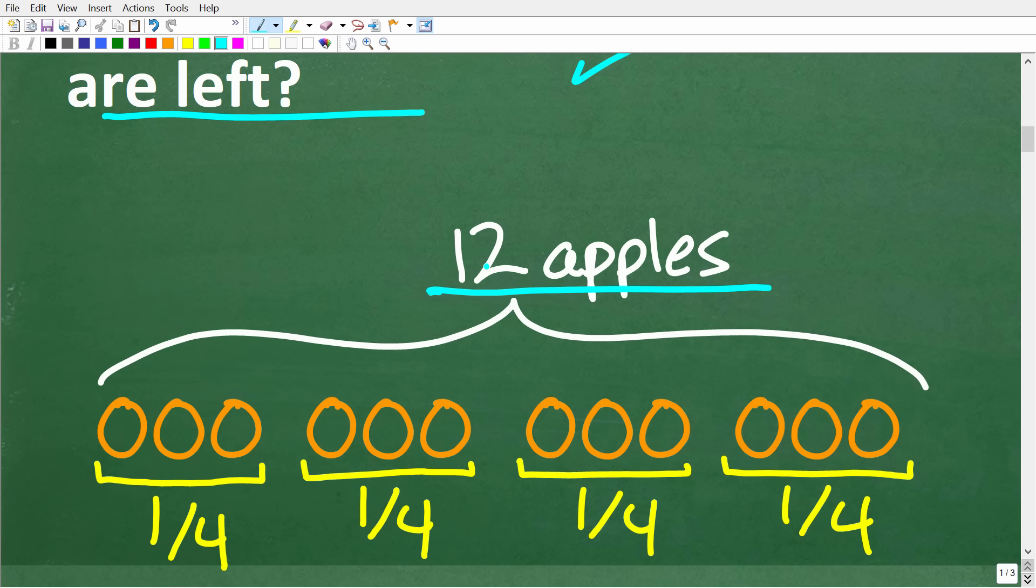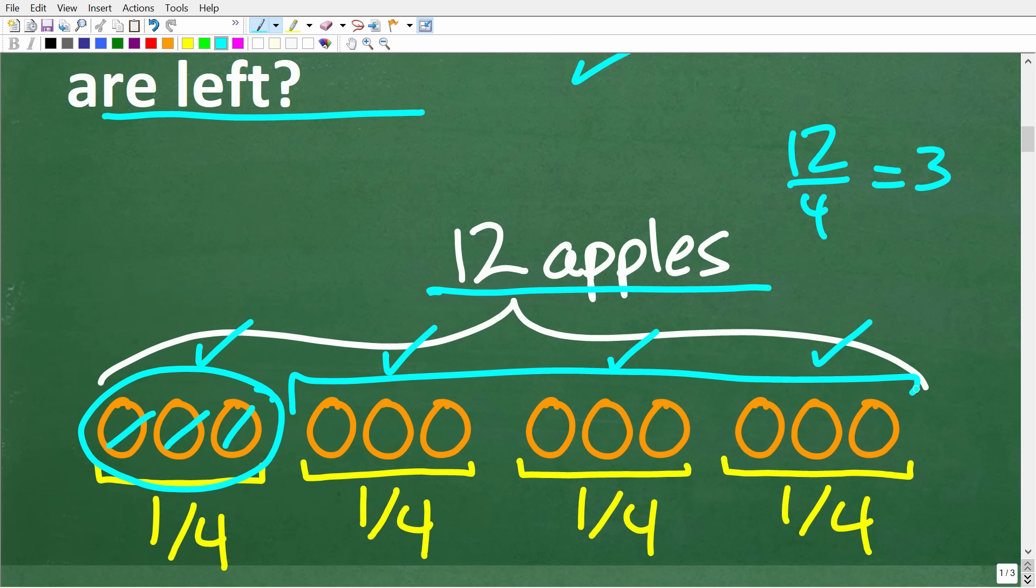So here's 12 apples. So what does it mean to take one-fourth of these apples away? Well, we need to kind of think about what is one-fourth of 12. So what we have to do is take 12 and divide it by 4, right? So 12 divided by 4 is 3. So one-fourth, or fourths here of 12, is going to be groups of 3. So here we have one-fourth, which is 3 apples. So if we take 3 apples away, which is of course one-fourth, how many apples are left? Well, we have 9 apples.